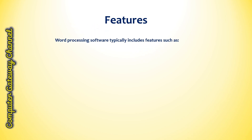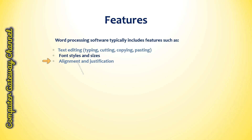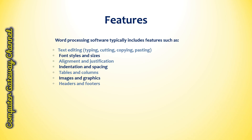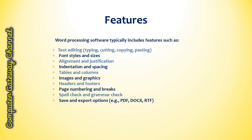Word processing software typically includes features such as text editing, font styles and sizes, alignment and justification, indentation and spacing, tables and columns, images and graphics, headers and footers, page numbers and breaks, spell check and grammar check, and save and export options.